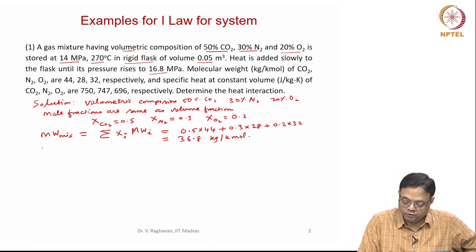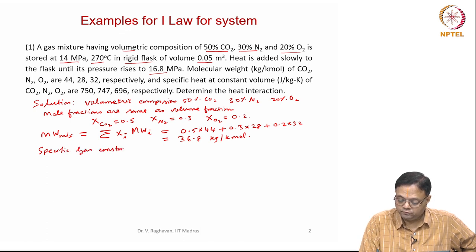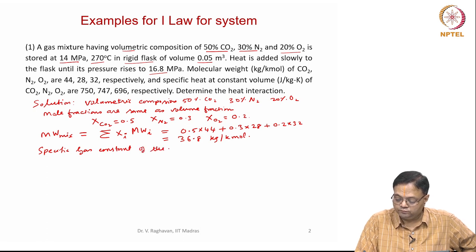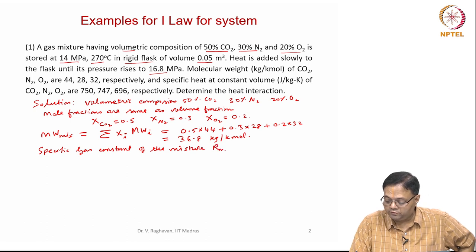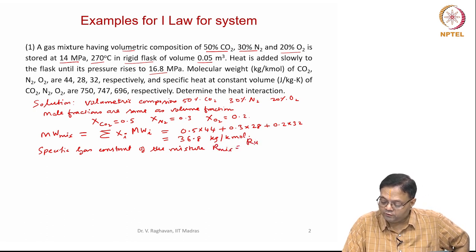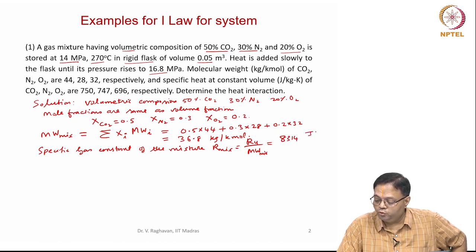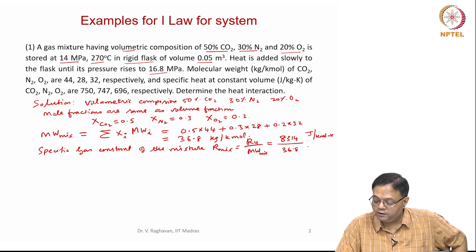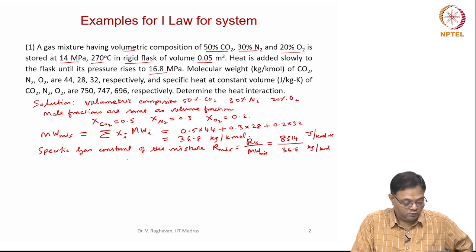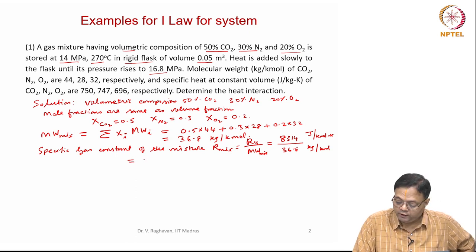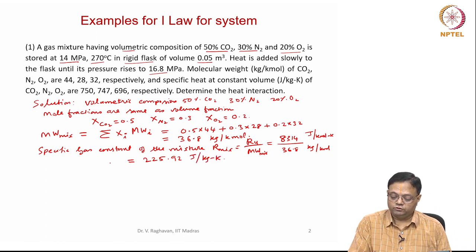Now, specific gas constant of the mixture: R_mix equals the universal gas constant divided by the molecular weight of the mixture, which is 8314 joule per kilo mole divided by 36.8 kg per kilo mole, which equals 225.92 joule per kilogram Kelvin. This is the specific gas constant R of the mixture.